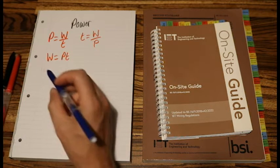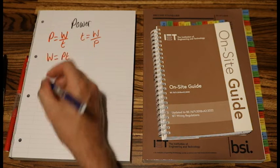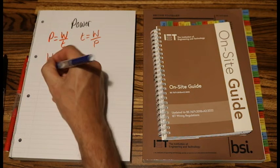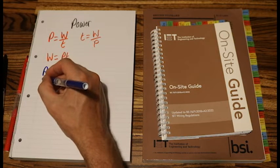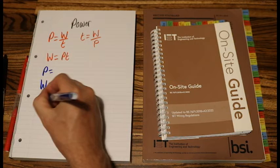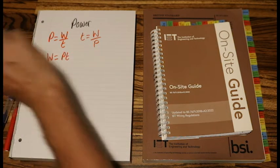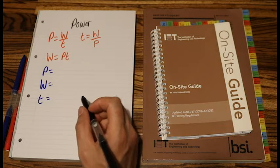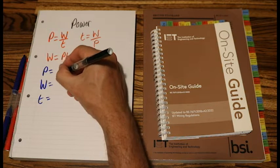So let's switch pens, let me grab my blue pen. And we'll write down what each letter stands for. So we have capital P equals, we've got a capital W and a lowercase t. So capital P stands for power.